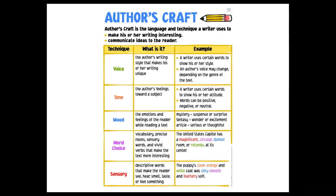The author often uses language such as figurative language or sensory words to describe and create vivid mental pictures for readers. Specific word choices the author makes can also shape the meaning of the text. Word choice can also communicate the tone, or how the author feels about the subject.